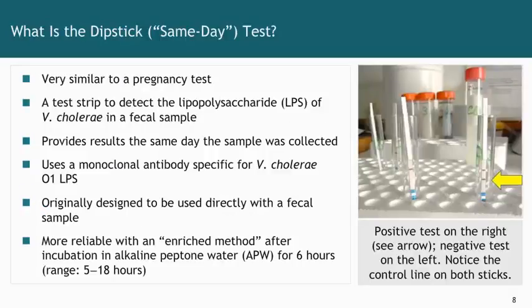I call this a same-day test rather than a rapid test, because the result can be obtained within the same day the specimen is obtained. It works very similarly to a pregnancy test — it's a test strip designed to detect the lipopolysaccharide of the Vibrio cholera bacterium from a fecal specimen, providing results the same day the sample was collected. It uses a monoclonal antibody specific for Vibrio cholera O1 LPS. The dipstick has two lines: one for serotype O1, the other for O139.